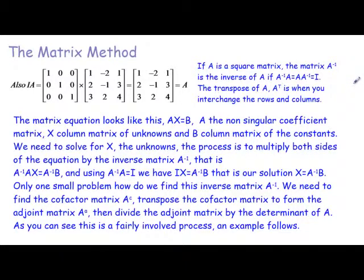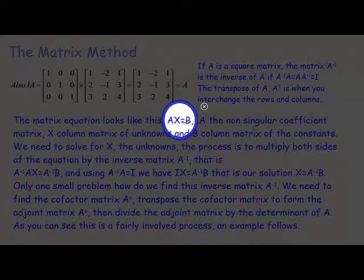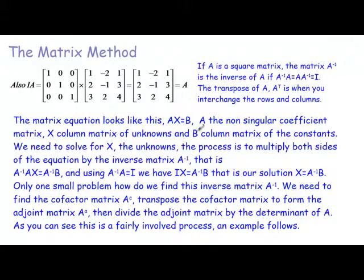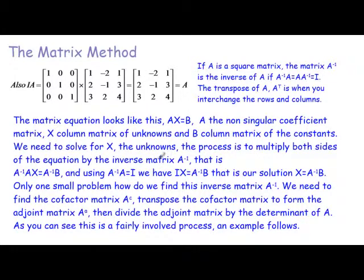The matrix equation looks like this: A times X equals B. A is the non-singular coefficient matrix. X is a column matrix of the unknowns, and B is also a column matrix of the constants — those are the values on the right-hand side of the equals sign in a system of linear equations. Basically, we need to solve for X.